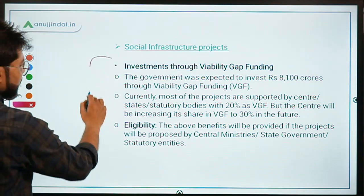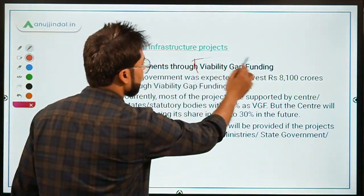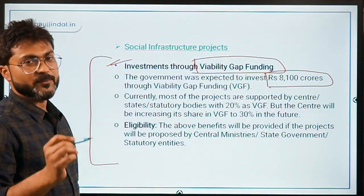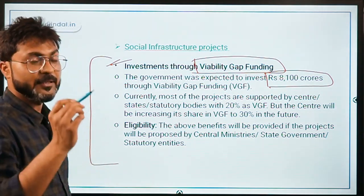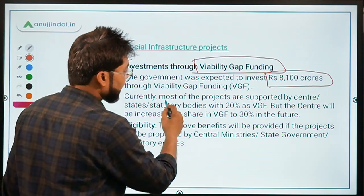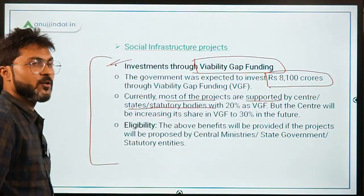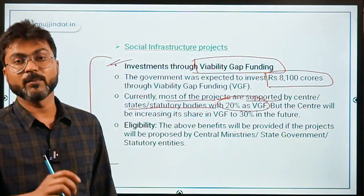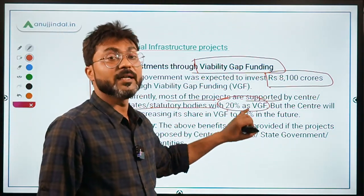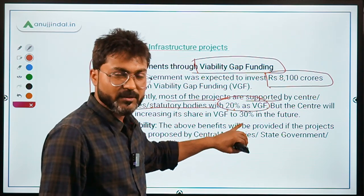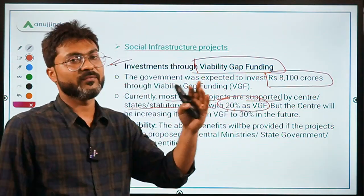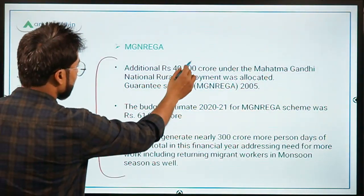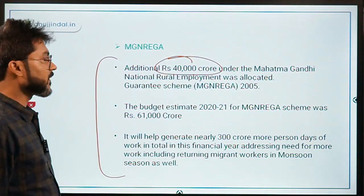For social infrastructure projects, ₹8,100 crore investment through viability gap funding was announced. The viability gap funding support was increased from 20% to 30%. Under MGNREGA, ₹40,000 crore additional fund was provided by the government.